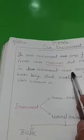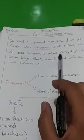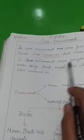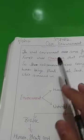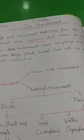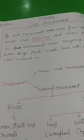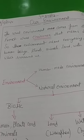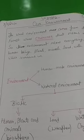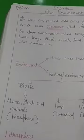So the environment means everything such as human beings, plants, animals, land, water, and air which surround us. In simple terms, whatever we see in our surroundings is this collectivity called environment. This surrounding environment can be divided into two parts: human-made environment and natural environment.